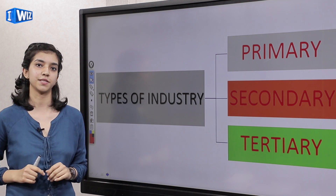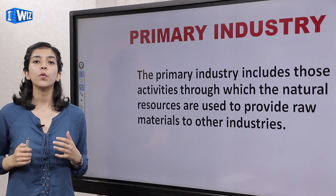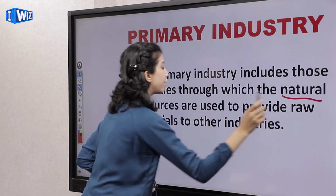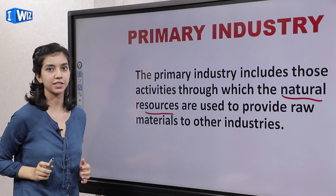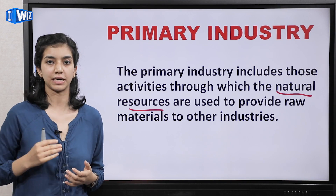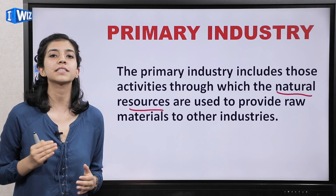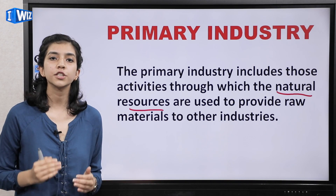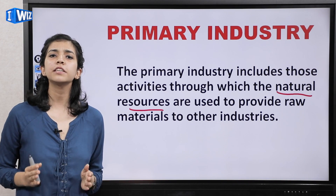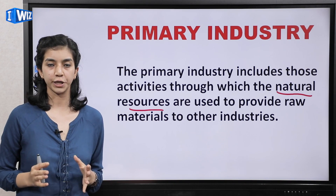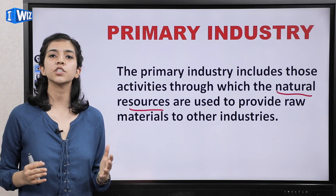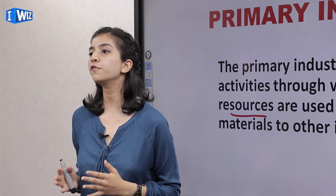What are primary industries? The primary industry includes those activities through which natural resources are used to provide raw materials to other industries. Yahan hota kya hai ki raw material jo hota hai wo hum lete hain nature se — natural resources ko process karke ek semi-finished good create hota hai, aur yeh semi-finished good further transfer hota hai doosari industries ko. Like for example, wood — jo tree ki trunks hoti hain, usse wood logs primary industry mein create hote hain. Phir yeh wood logs further send kiye jaate hain maybe to the furniture industries where they are converted into proper furniture.